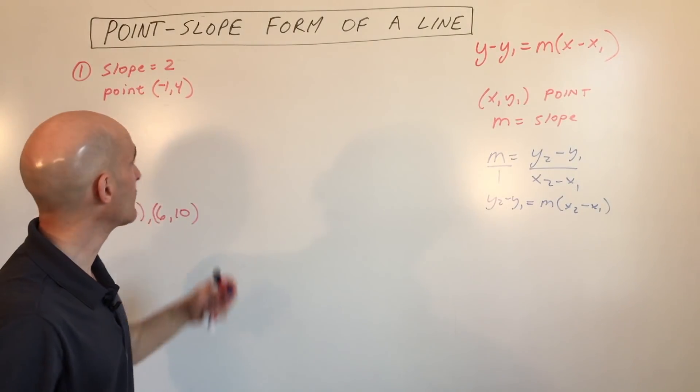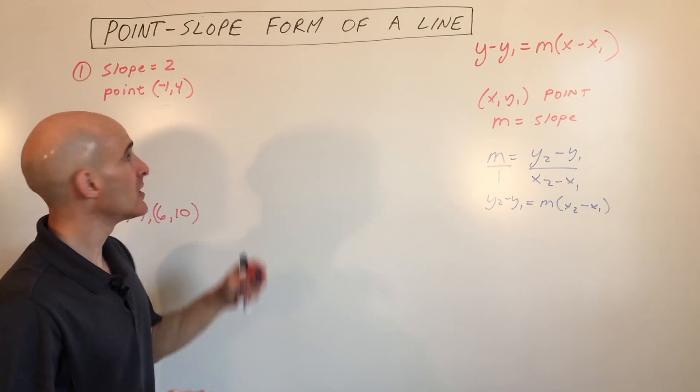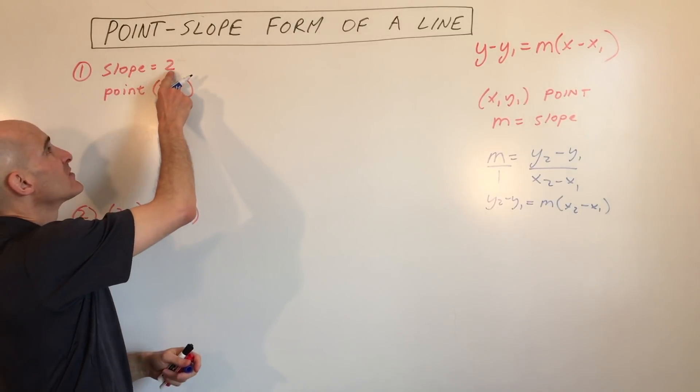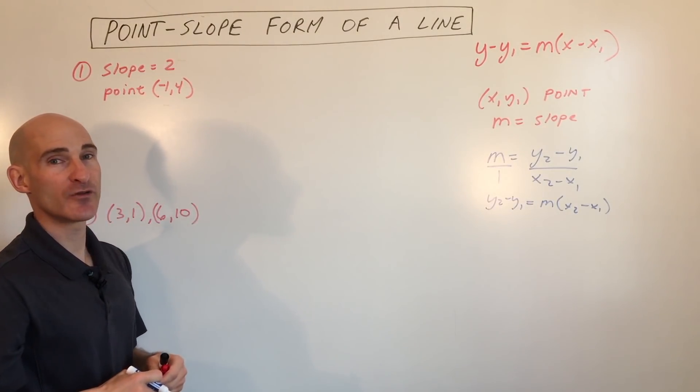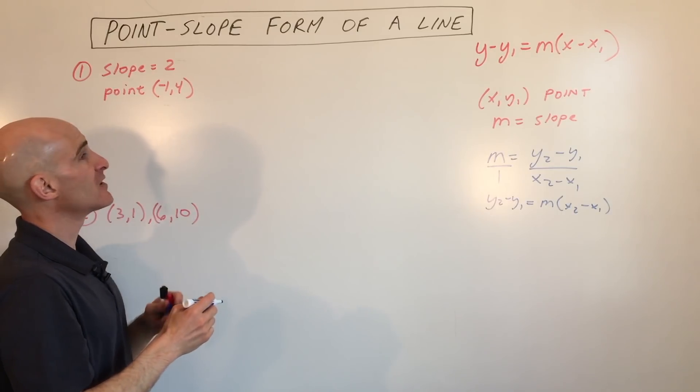Let's look at some example problems and talk about how to write the equations of lines. In this first example, we're given the slope is 2 and the point that the line goes through is negative 1, 4. So this one's set up pretty nice for us.